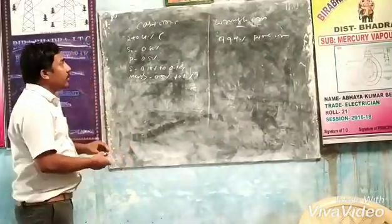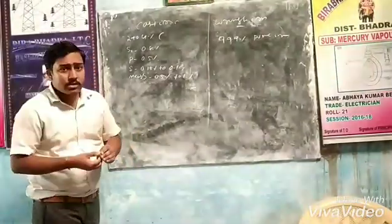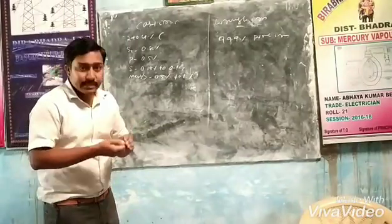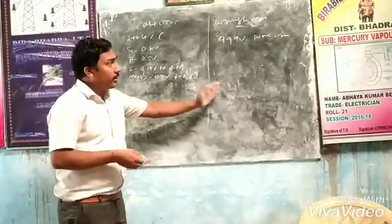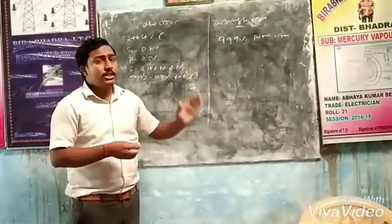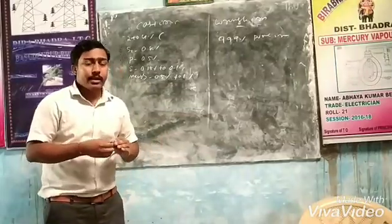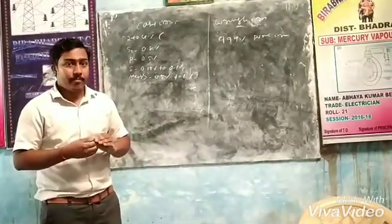Cast iron cannot be hardened and cast. Wrought iron cannot be hardened and tempered, but it can be welded.